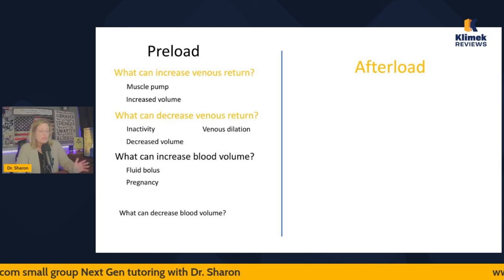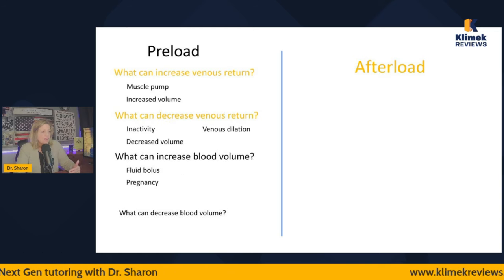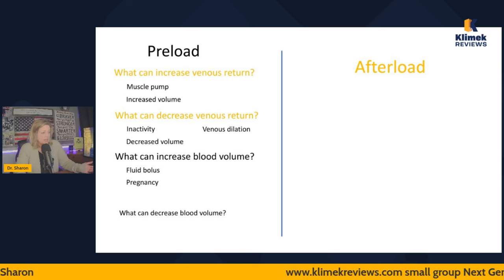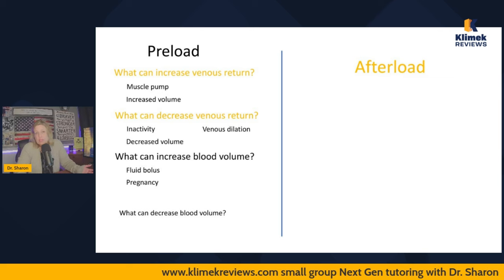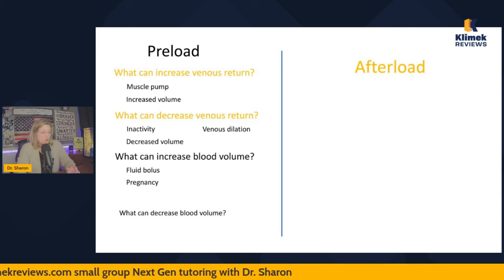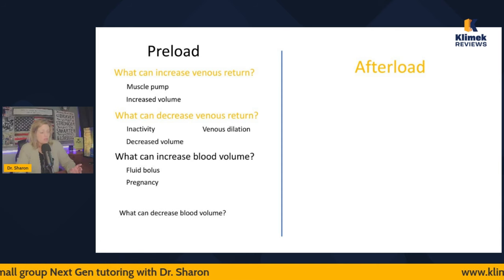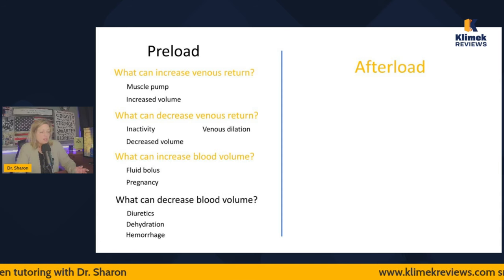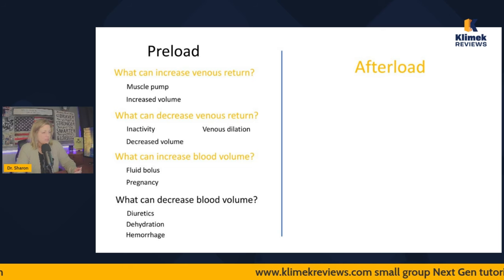What can increase overall blood volume? A fluid bolus — or pregnancy. Pregnancy increases overall fluid blood volume quite a bit without any intervention, so you have increased preload during pregnancy. What can decrease blood volume? Diuretics, dehydration, or hemorrhage.